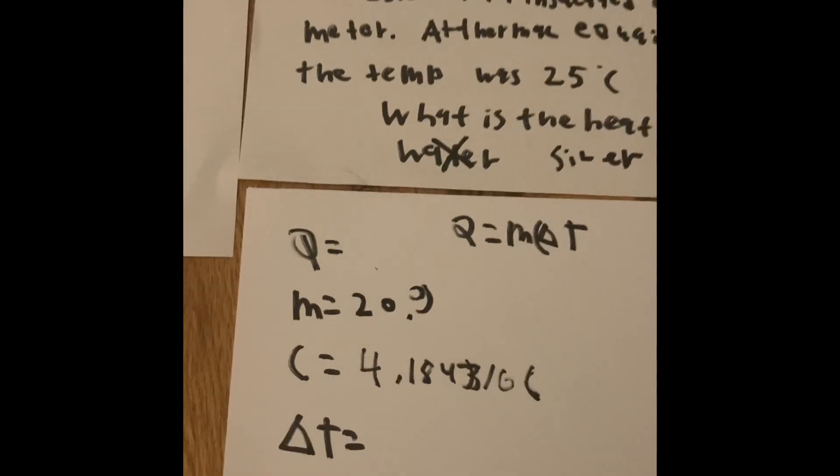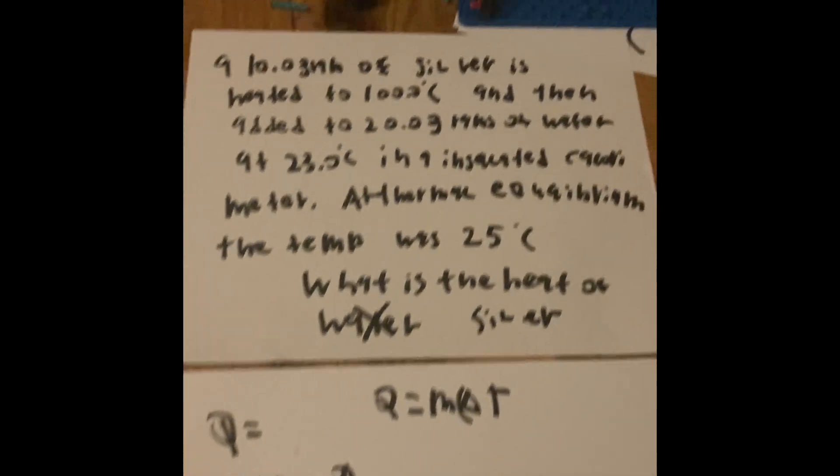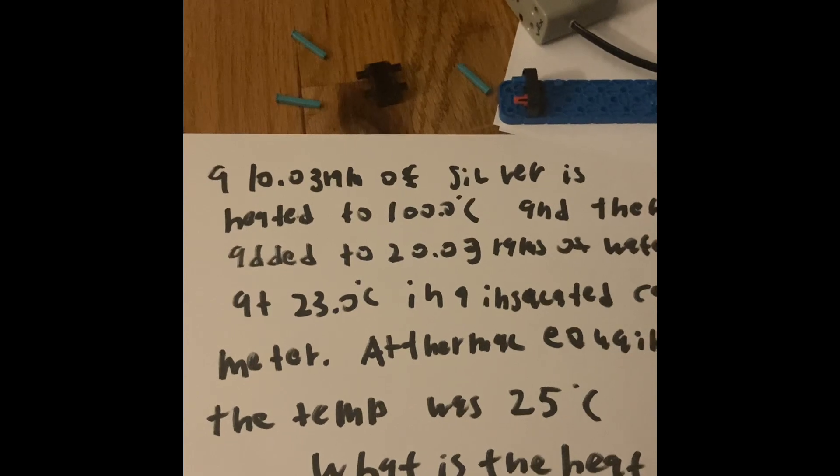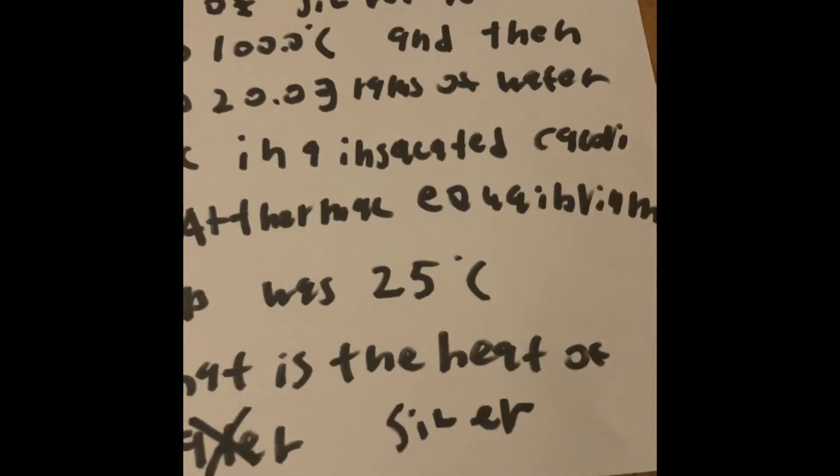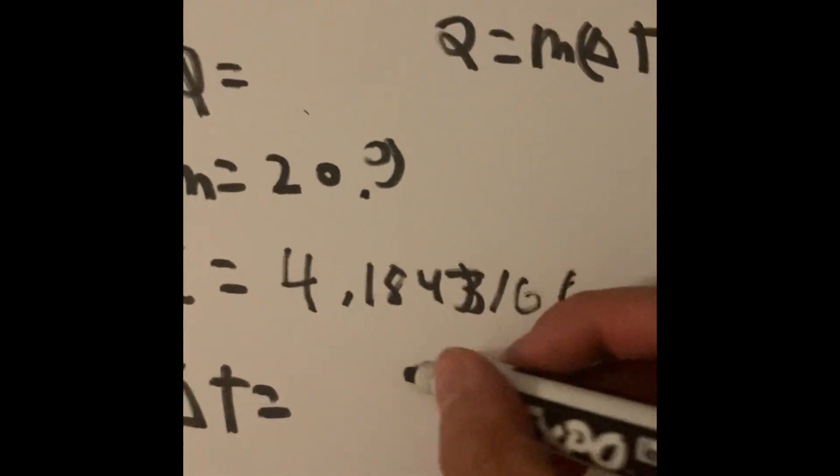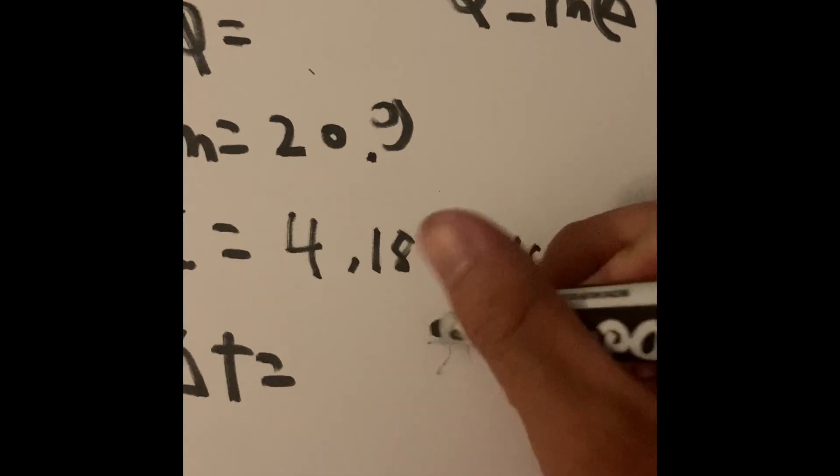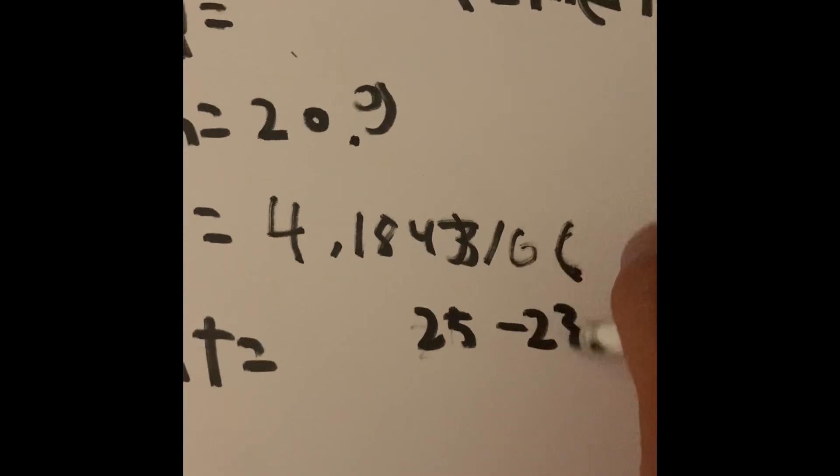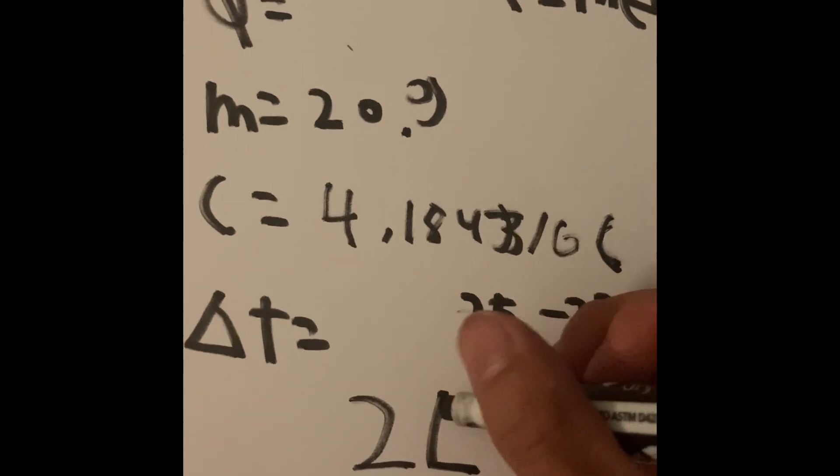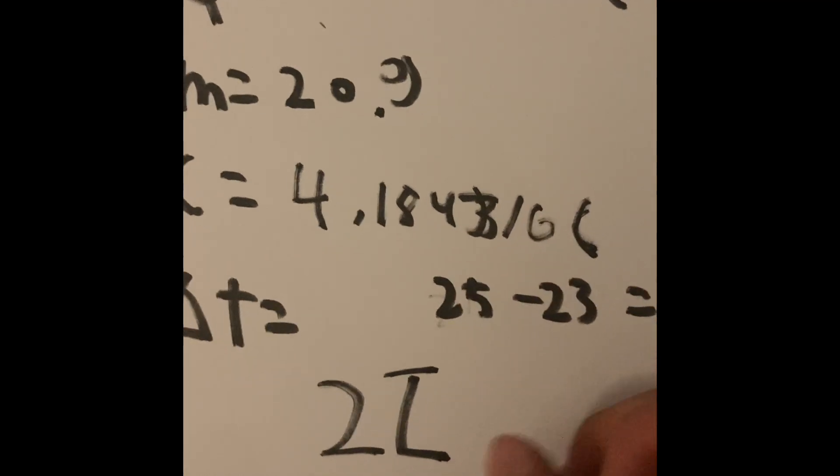And finally, the change in temperature. The water was at 23 degrees Celsius before, but after we put the cube in and it cooled off a bit, it was at 25 degrees Celsius. So 25 minus 23 equals 2. The change in temperature was 2 degrees Celsius.